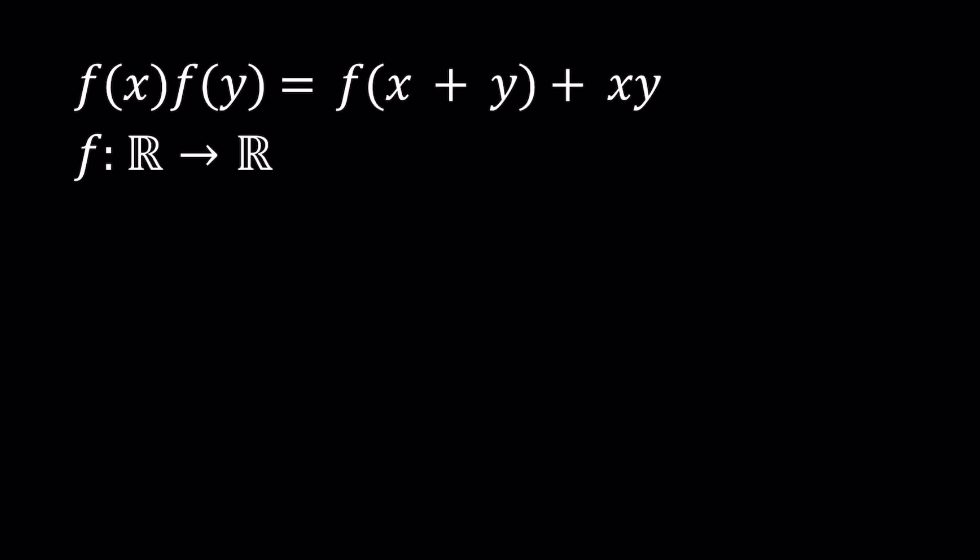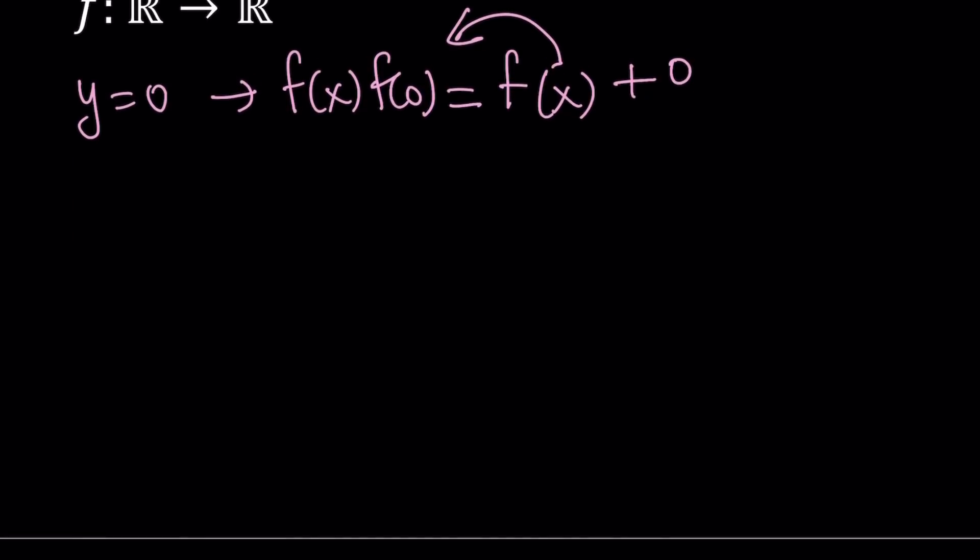We're going to start, and this is kind of a general strategy for most functional equations. We're going to start by replacing x or y with 0, because f(0) plays an important role in functional equations. Let's go ahead and replace y with 0. This gives us f(x) times f(0) equals f(x+0), which is f(x), and then this becomes just plus 0. The reason I wrote the 0 is because I'm going to subtract f(x), so 0 is going to be left over on the right hand side.